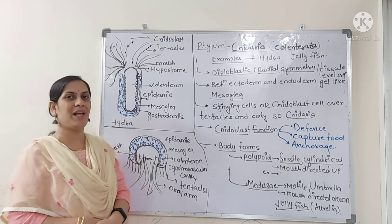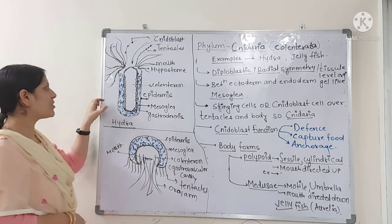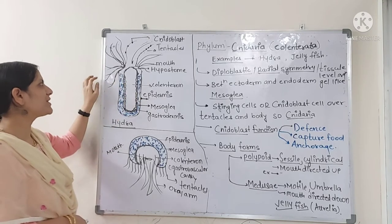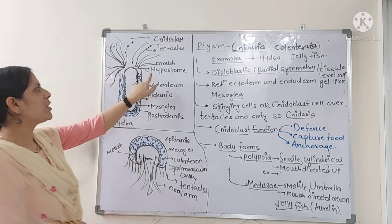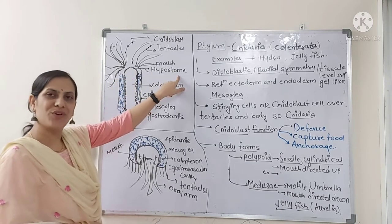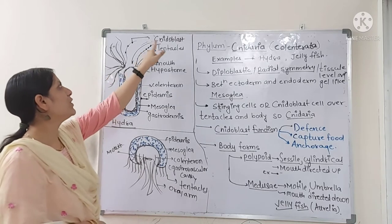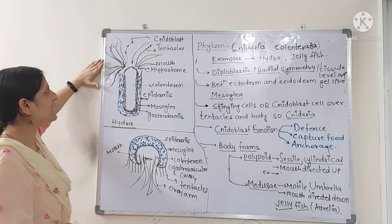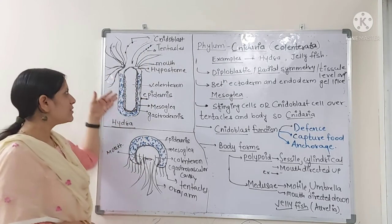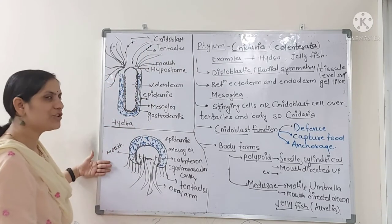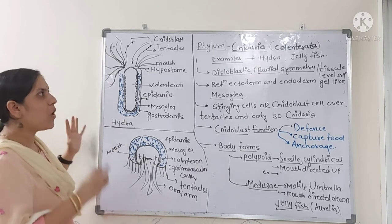This gastrovascular cavity helps for the process of digestion. On hydra's body there is one elevated portion known as hypostome. Over the hypostome there is a mouth, and around the mouth you can see a number of tentacles which bear cnidoblast cells. From the diagram of hydra and jellyfish, you can understand that all cnidarians do not look the same.